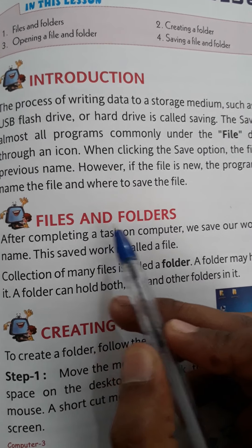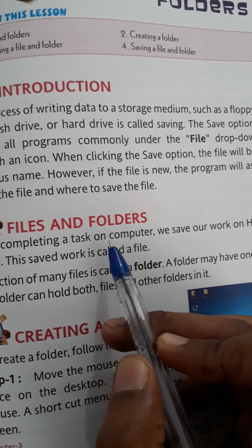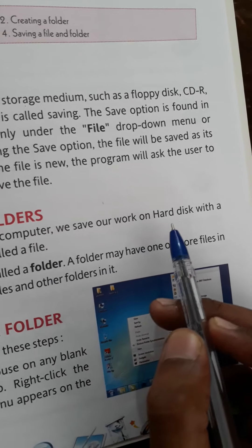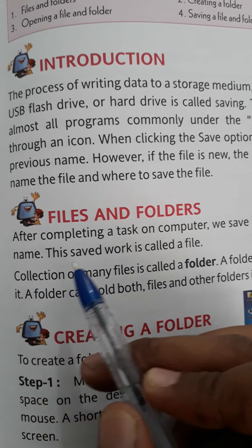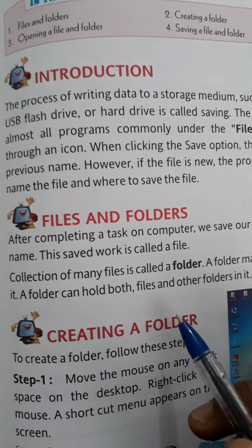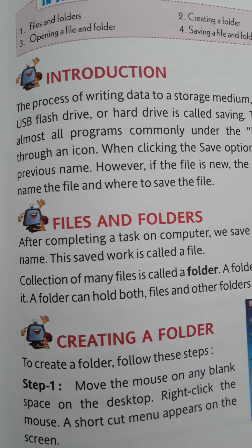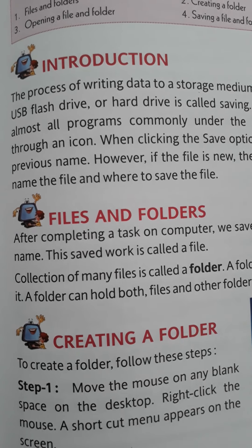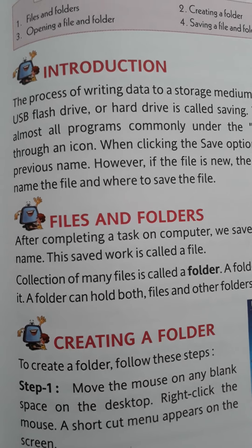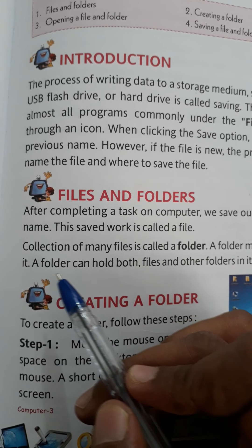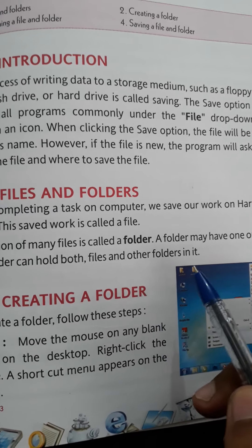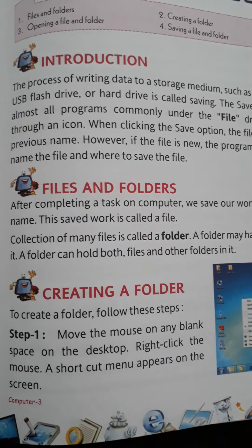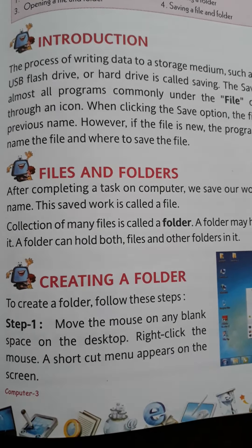After completing a task on a computer, we save our work on the hard disk with a name. This saved work is called a file. So whenever we do any work and save it with a particular name in a computer, that is called a file. In the same way, a collection of many files is called a folder. A folder may have one or more files in it, and a folder can hold both files and other folders in it.